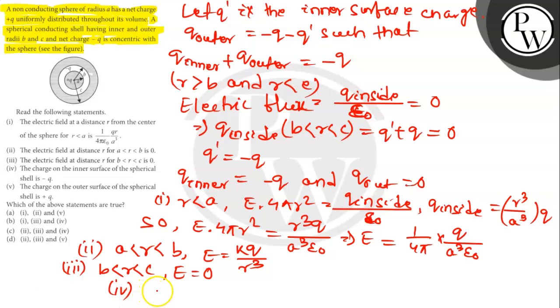So electric field for C less than R, E is equal to K outer divided by R square. So it will be K into 0 square divided by R square which is 0. 3 and 4 are correct.